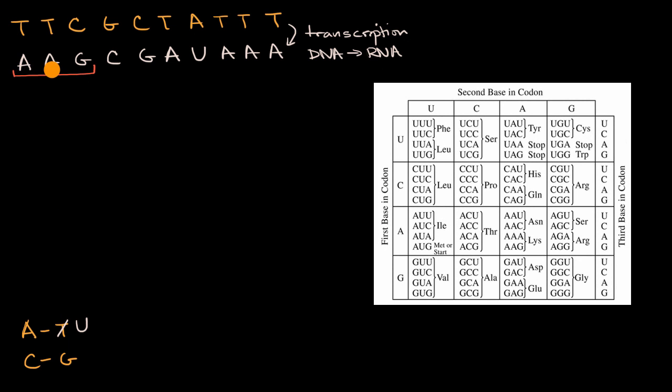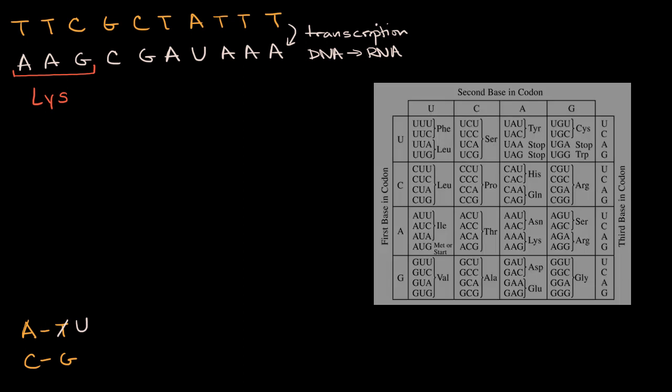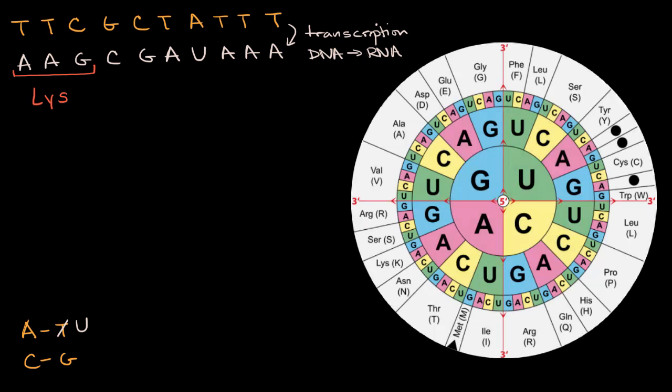So the first base is A, second base is A, third base is G. First base A, second base A, we're in this cell, third base is G. And so that will code for the amino acid lysine. So we could write L-Y-S, short for lysine here. And we could have also gotten that from a different type of translation table. For example, you might see a circular one that looks like that. But we would have gotten the same result. A-A-G, start at the center. A-A-G codes for lysine.